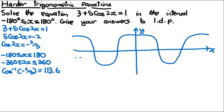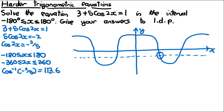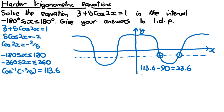We draw the graph with -2/5 marked, and as we can see there are 4 solutions. The first is 113.6. We find the distance between this point and 90, which is 113.6 minus 90 = 23.6. Using the same distance symmetry, the point near 270 is 270 minus 23.6 = 246.4.